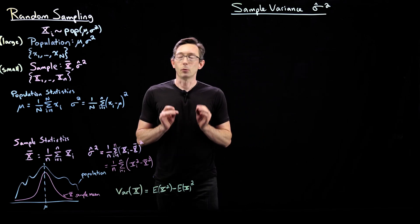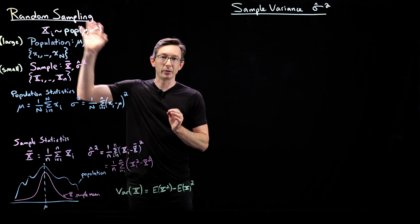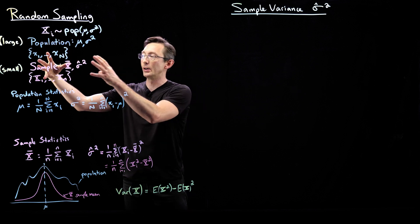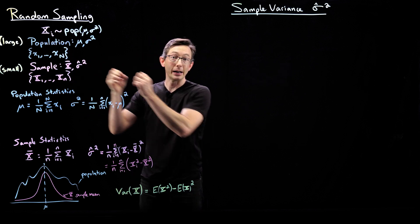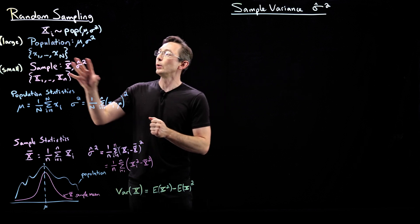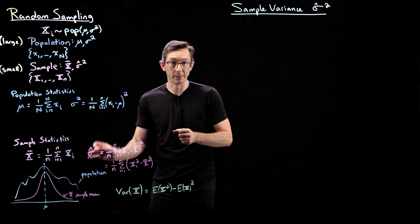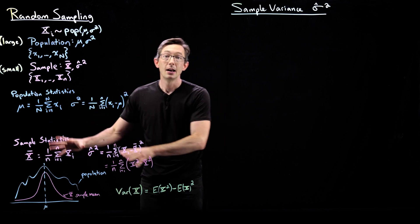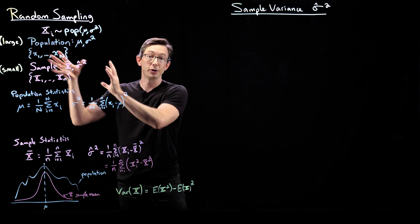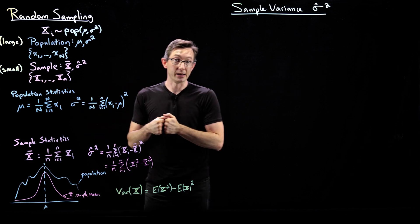Welcome back. We're talking about random sampling of an unknown population. We take a random sample of that population, compute sample statistics like the sample mean and sample variance, and hopefully we can say something about that larger population from properties of that random sample.